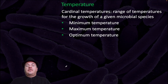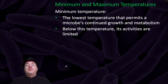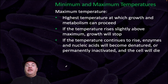Starting with temperature. Cardinal temperatures is a range of temperatures for the growth of a given microbial species. We can find minimum, maximum, and optimum temperatures for the different species. The minimum temperature is the lowest temperature that permits a microbe's continued growth and metabolism. Below this temperature, its activities are limited. The maximum temperature is the highest temperature at which growth and metabolism can proceed.